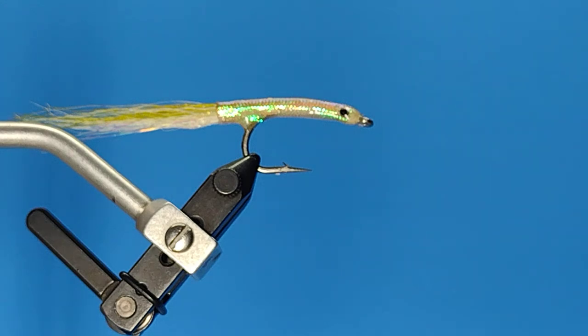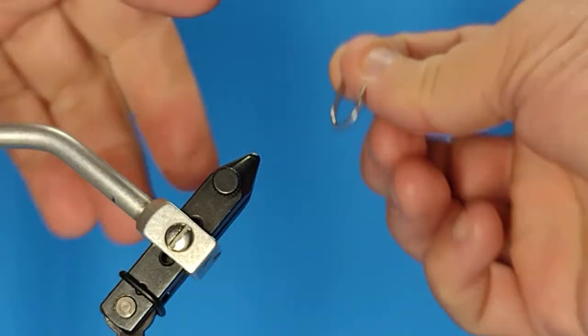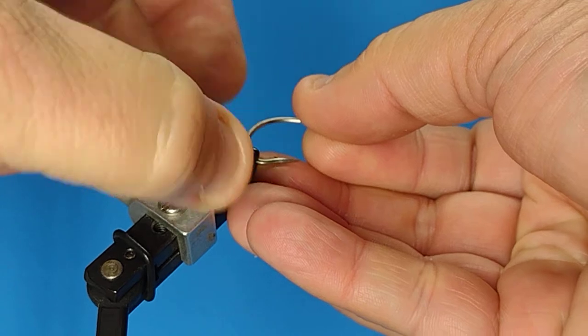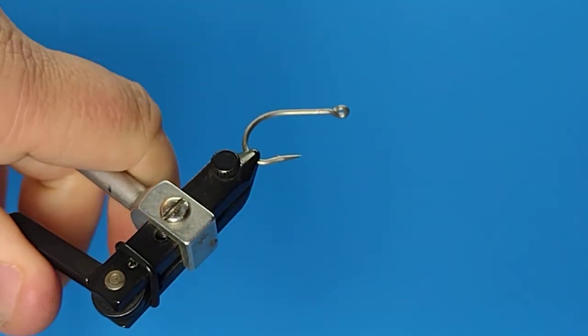Here's the silverside spearing. I'm going to get this hook in the vise first. I'm going to start with some white thread.